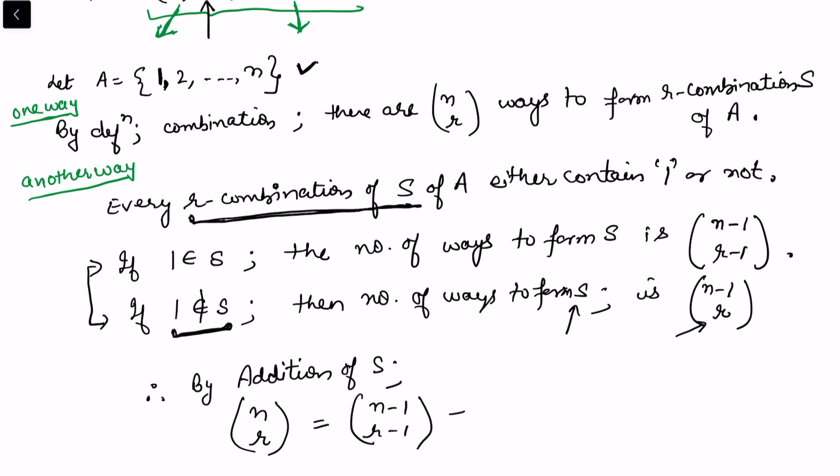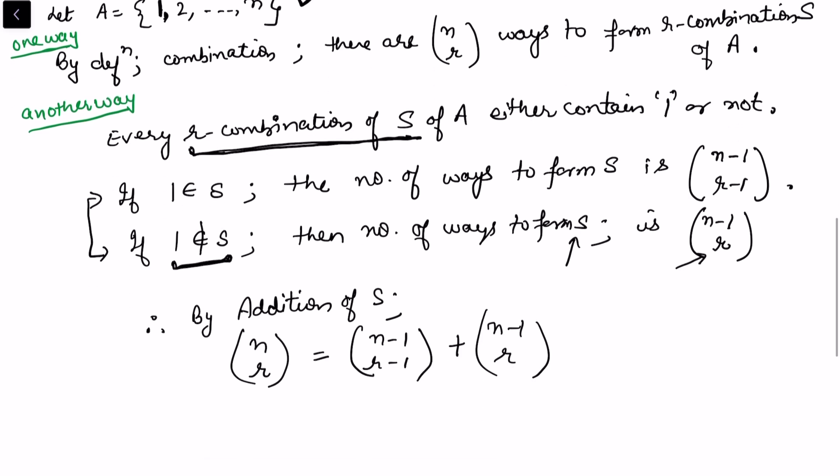This approach of dividing into distinct disjoint classes is called a combinatorial proof, and it is a very useful technique that leads to different combinatorial identities. We may see this in future videos, where this combinatorial approach gives rise to very beautiful identities.